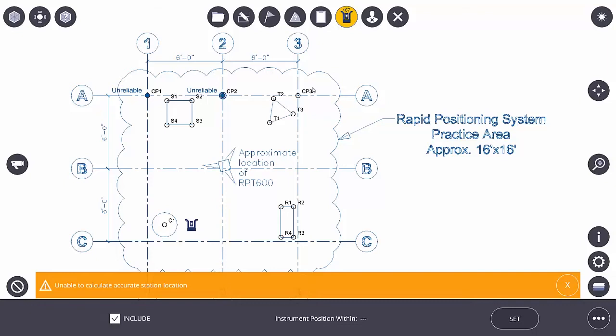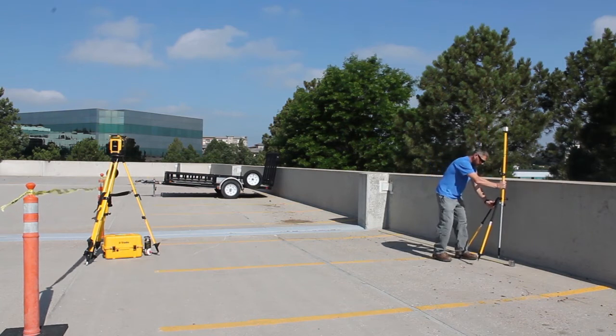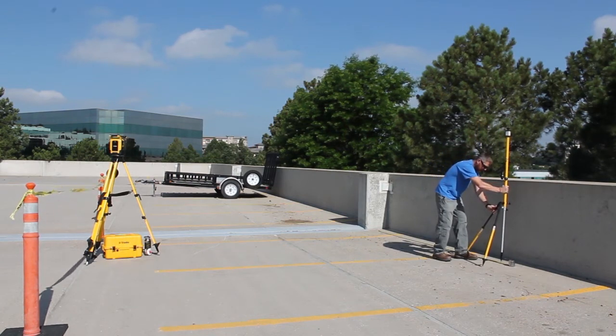So I'm going to now add a third control point. I'll select control point number three and take my prism over to control point three. Make sure that I'm plumb and on top of that point and then I'll hit the measure button.